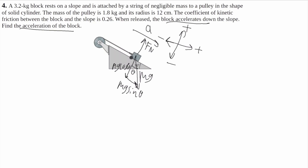This block will have friction that points up the hill, because it tells us that it accelerates down the hill. And this block will also have the force from the pulley, acting up the hill. So I'll call this Fp.